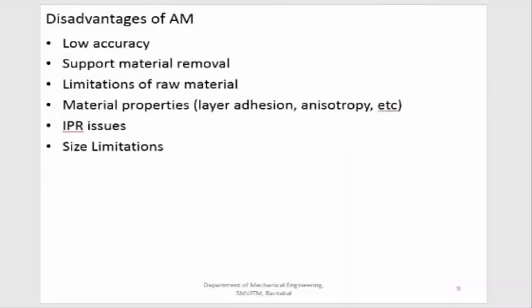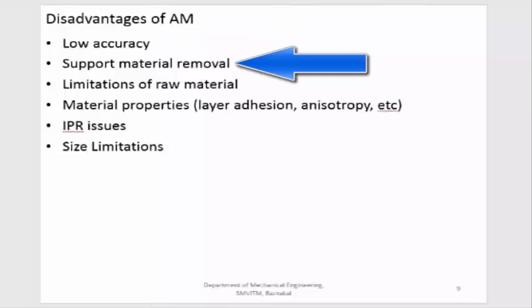Now, what are the disadvantages? The main disadvantage is low accuracy. The accuracy levels are very low because when printing the material, the volume reduces due to shrinkage, and high temperatures cause expansion, so accuracy achieved by additive manufacturing is much less compared to CNC machines. The next disadvantage is support material removal. In additive manufacturing, overhanging structures require support material. After the component is printed, the support material must be removed, followed by polishing or sanding to improve surface finish, which can be very tedious.